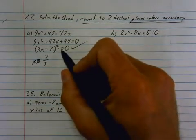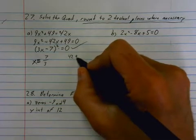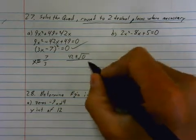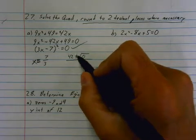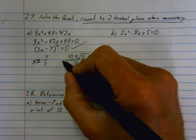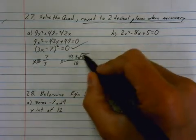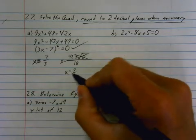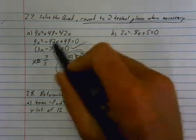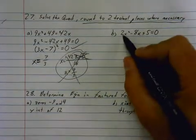If you did this by the quadratic formula, what you end up getting is 42 plus or minus the root of 0 over 2a, which is going to be 18. So if you did it by the quadratic formula, you would have gotten this at some point. This goes away, so you just end up with 42 over 18, which reduces to 7 over 3. So both of these ways will work. Next one.